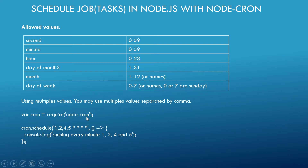You can also specify multiple values separated by commas. For example, using cron.schedule, you can say 1,2,4,5 — this means running every minute 1, 2, 4, and 5. So the job is scheduled to run at minutes 1, 2, 4, and 5.